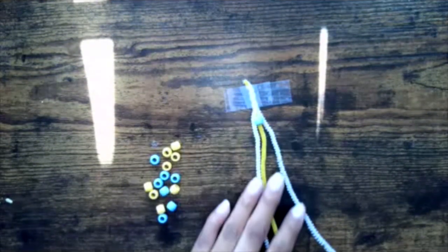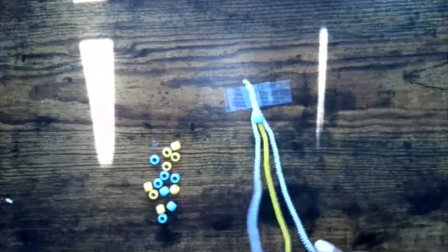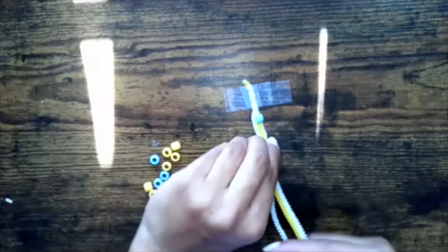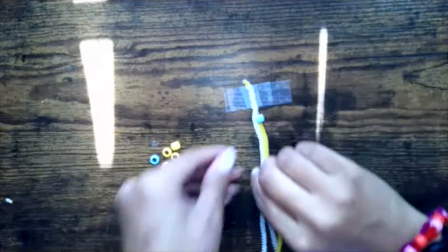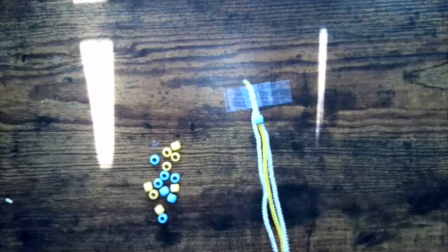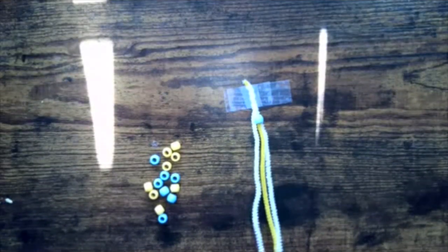You want to push it all the way to the end of your bracelet. Once that first pipe cleaner is done, you're going to gather all three of your pipe cleaners, making sure to keep that yellow one in the middle, and you're going to feed your next bead onto all three pipe cleaners.